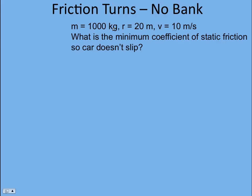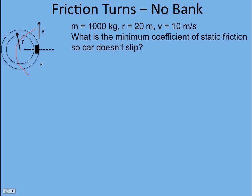What is the minimum coefficient of static friction so that the car doesn't slip? This is an overhead view of the turn — a fraction of the turn with a radius of 20 meters; it doesn't have to be a complete circle. We need a different perspective than this overhead view, so let's imagine we're standing behind the car watching it drive away from us and draw the free-body diagram. We see the normal force up, weight acting straight down, and friction acting toward the center of the circle, causing the car to make its turn. The force of friction is causing the centripetal acceleration — the car changing its velocity.